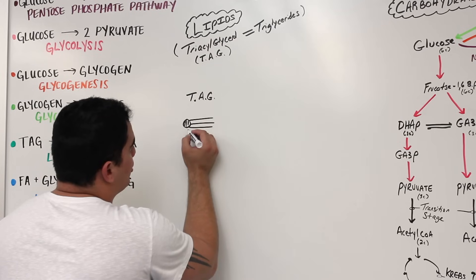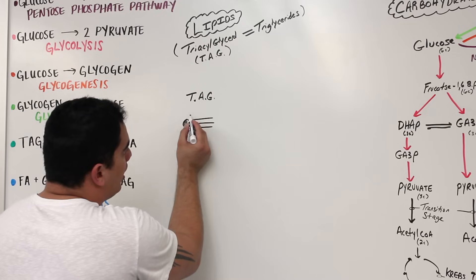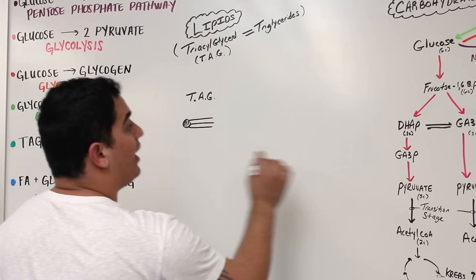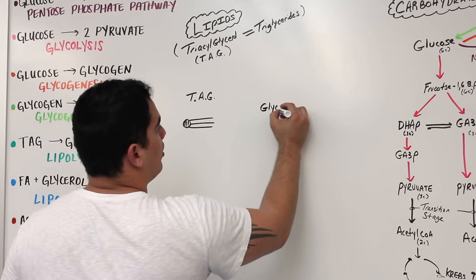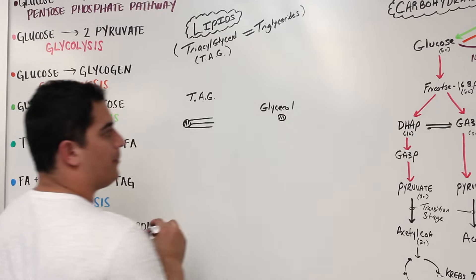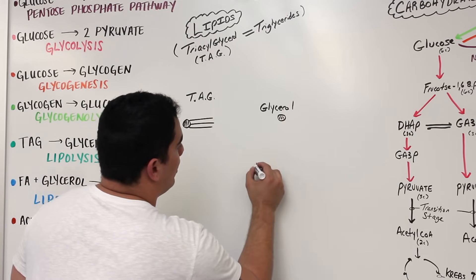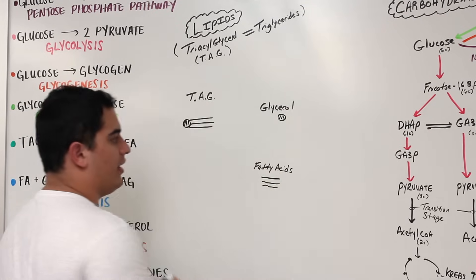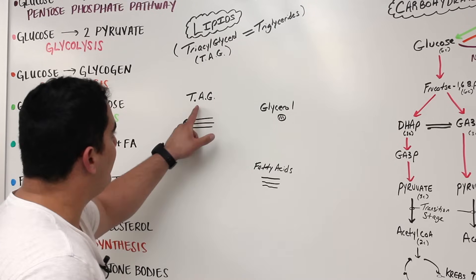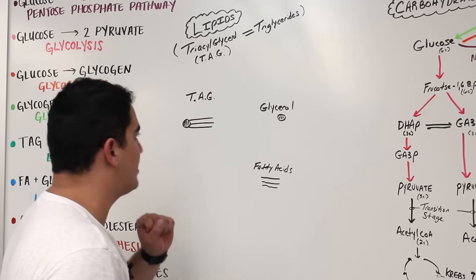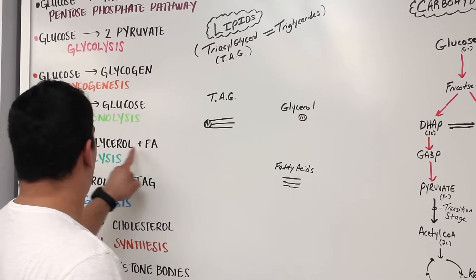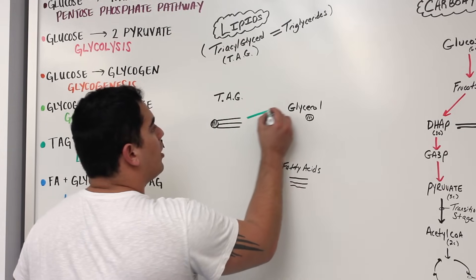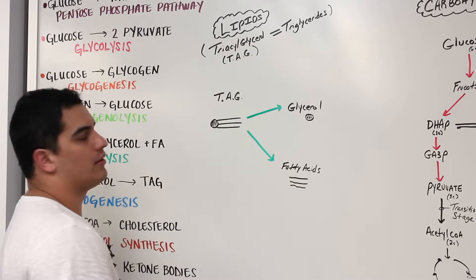We break the triglyceride down into its two constituents by breaking the ester bond. The little tails are the fatty acids and the head is the glycerol. So we break it into glycerol and fatty acids. Going from triacylglycerol to glycerol and fatty acids — that is lipolysis. Breaking the ester bond and separating these two components is lipolysis.